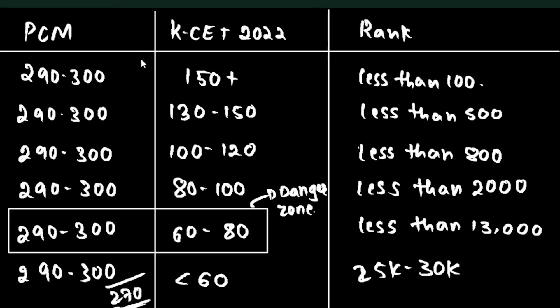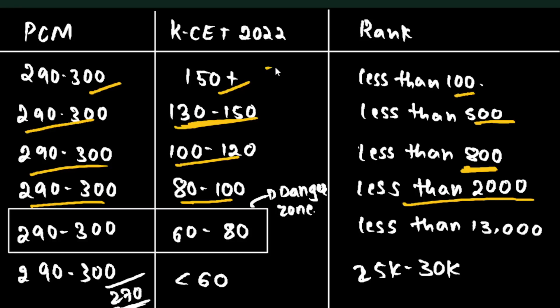If you're getting 290-300 in K-CET and 150+ in board marks, you'll get a rank less than 500 - this is guaranteed. If you're getting 290-300 and 100-120 in boards, your rank will be less than 800. If you're getting 280-290 and 80-100 in boards, your rank will be less than 2,000. This is one of the safest scores.